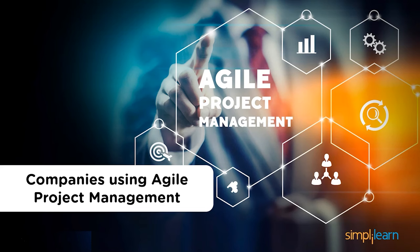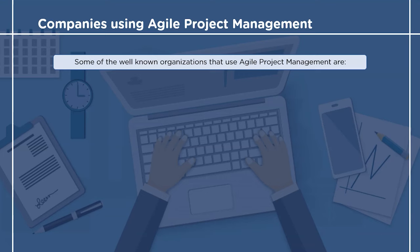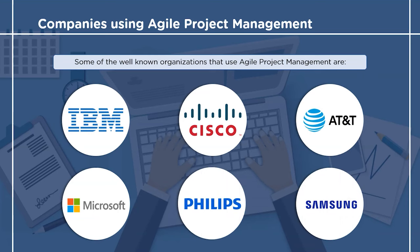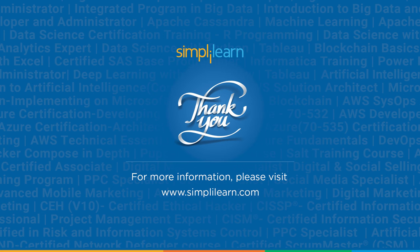Finally, let's have a look at some companies that have opted for agile project management. Today around 22% of organizations worldwide have all their teams working on the principle of agile project methodology. Some of the most prominent companies that use agile project management include IBM, Cisco, AT&T, Microsoft, Philips, and Samsung. And with this we have come to the end of this session. I hope you found it informative and helpful. Thanks for watching and stay tuned for more from Simply Learn.